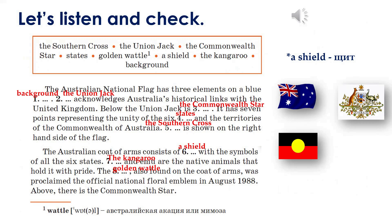Today we're going to talk about the Australian national symbols. Certainly, the first question will be about the national flag. The Australian national flag has three elements on a blue background. The Union Jack acknowledges Australia's historical links with the United Kingdom. Below the Union Jack is a white Commonwealth Star — it has seven points, representing the unity of the six states and the territories of the Commonwealth of Australia. The Southern Cross is shown on the right-hand side of the flag. This constellation of five stars can be seen only from the Southern Hemisphere and is a reminder of Australia's geography.